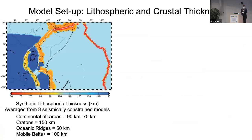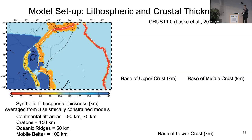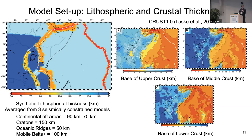To use this model, you need to set up your lithospheric structure. We applied it to East Africa, using synthetic lithospheric structure based on three seismically constrained models. You also have the ability to read in crustal structure — we used Crust 1.0 — allowing a base of the upper crust, middle crust, and lower crust as constraints.